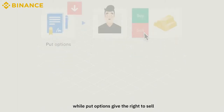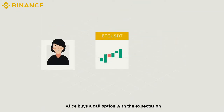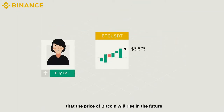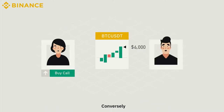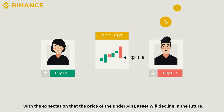For instance, Alice buys a call option with the expectation that the price of Bitcoin will rise in the future. Conversely, Bob buys a put option with the expectation that the price of the underlying asset will decline in the future.